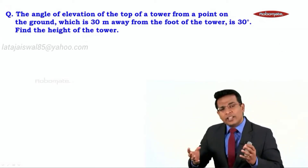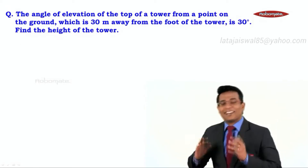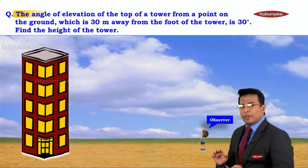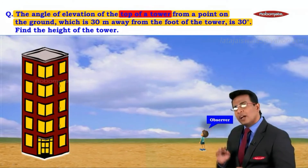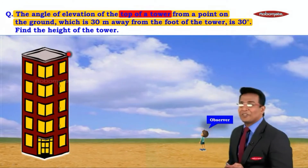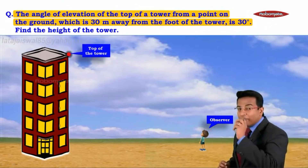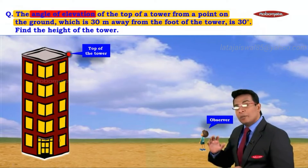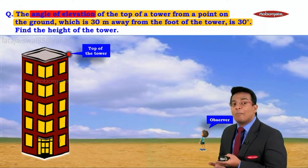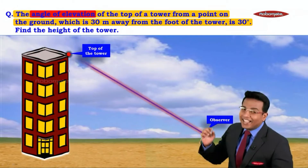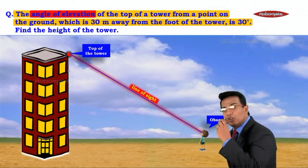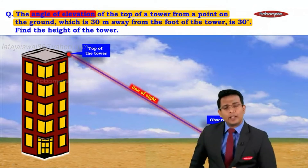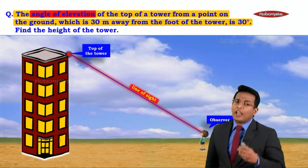From this statement we understand there is an observer observing the top of a tower. The top of the tower is the object and he is the observer. He is making an angle of elevation, meaning he is observing above the horizontal line. The line connecting his eye to the top of the tower is the line of sight.